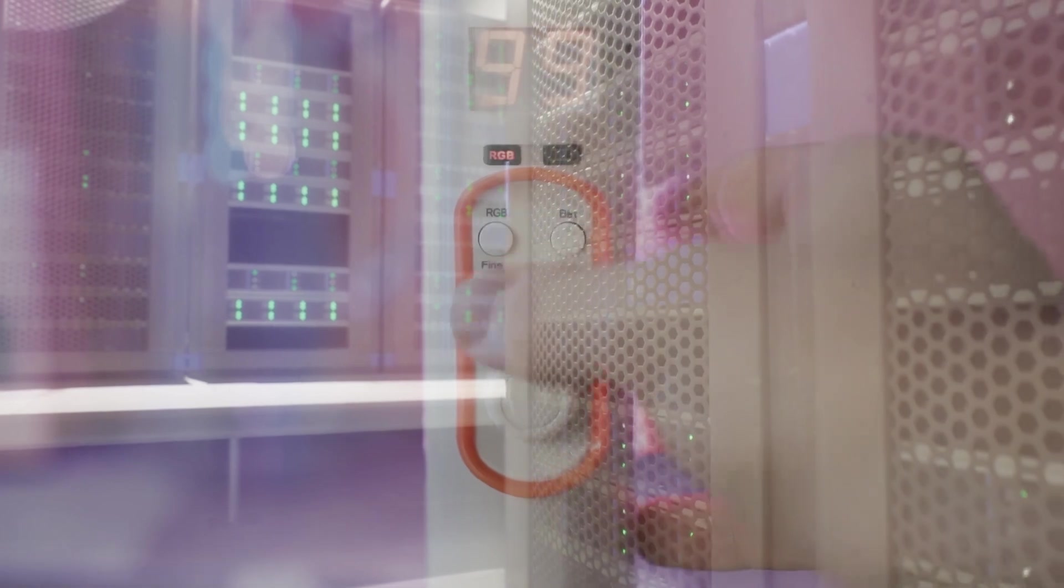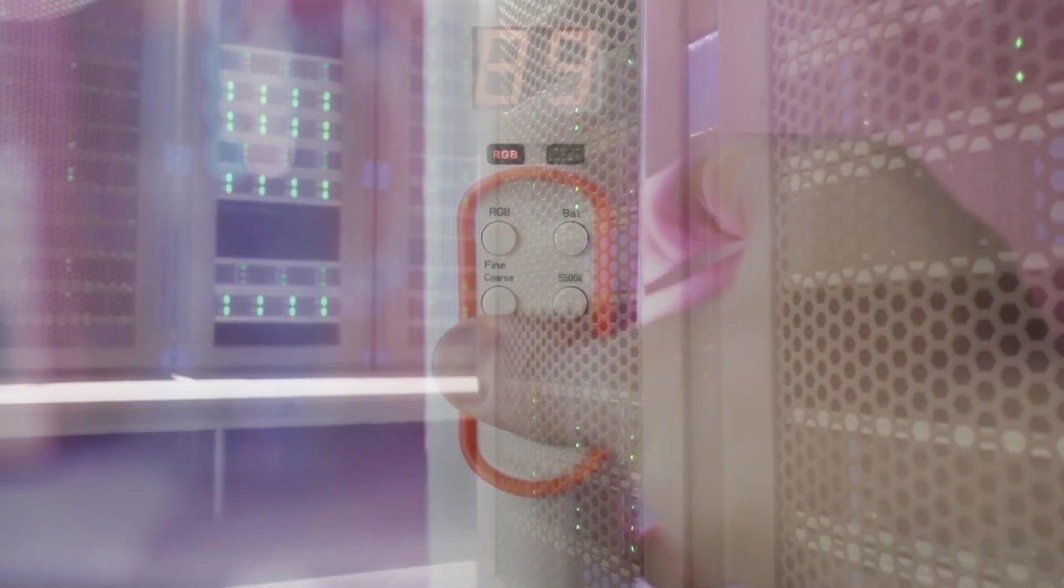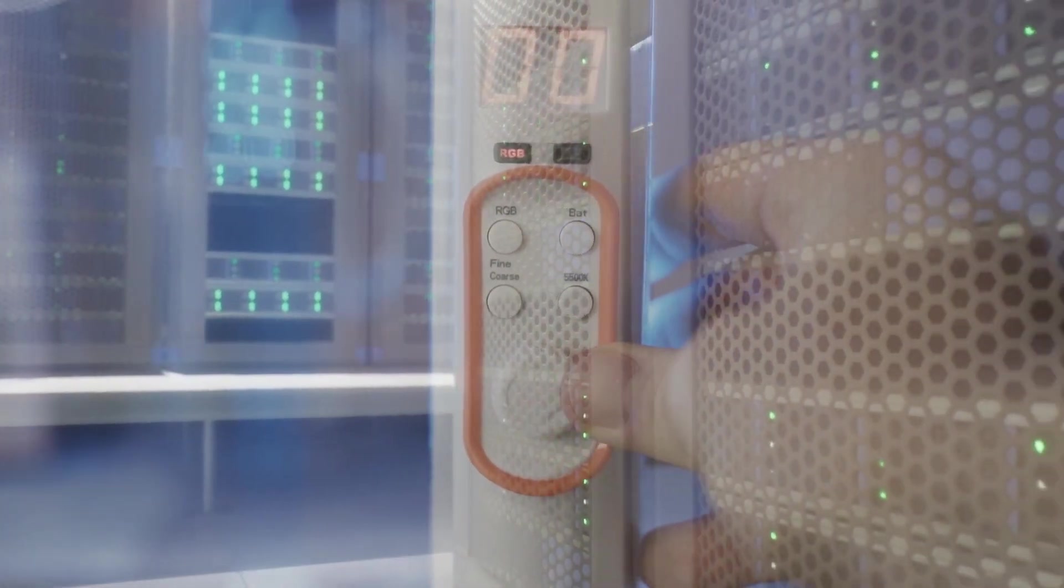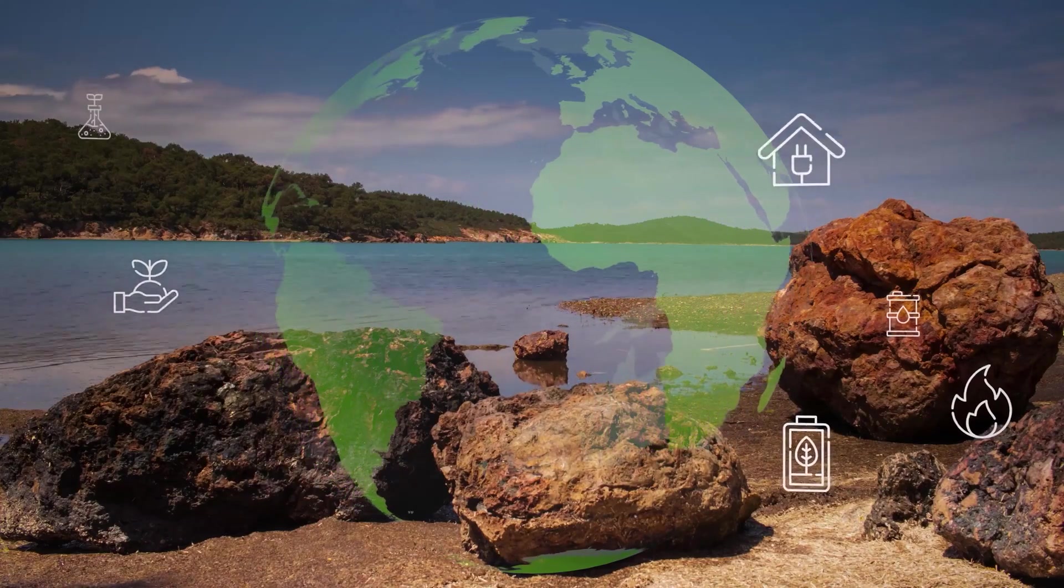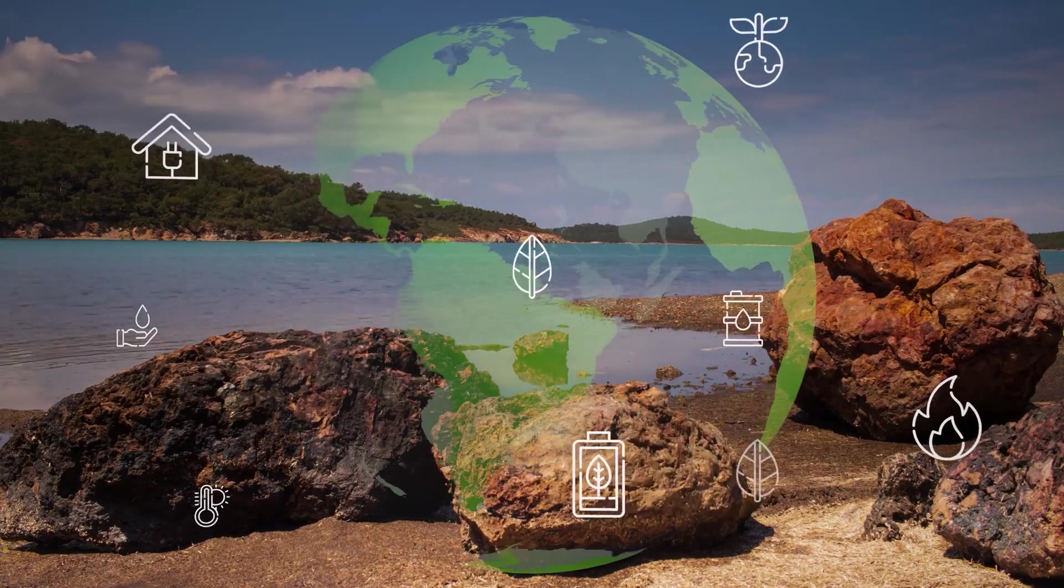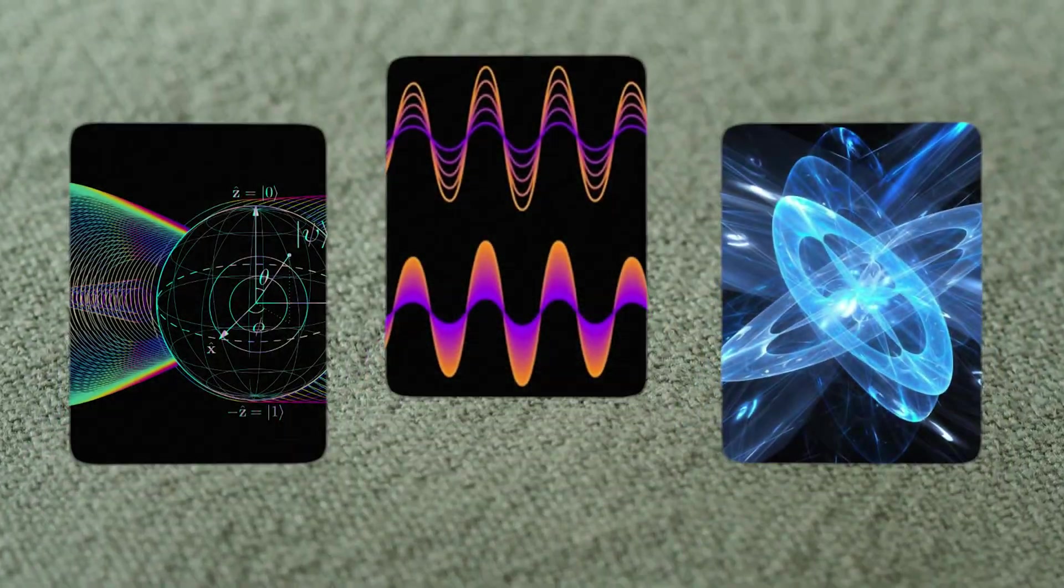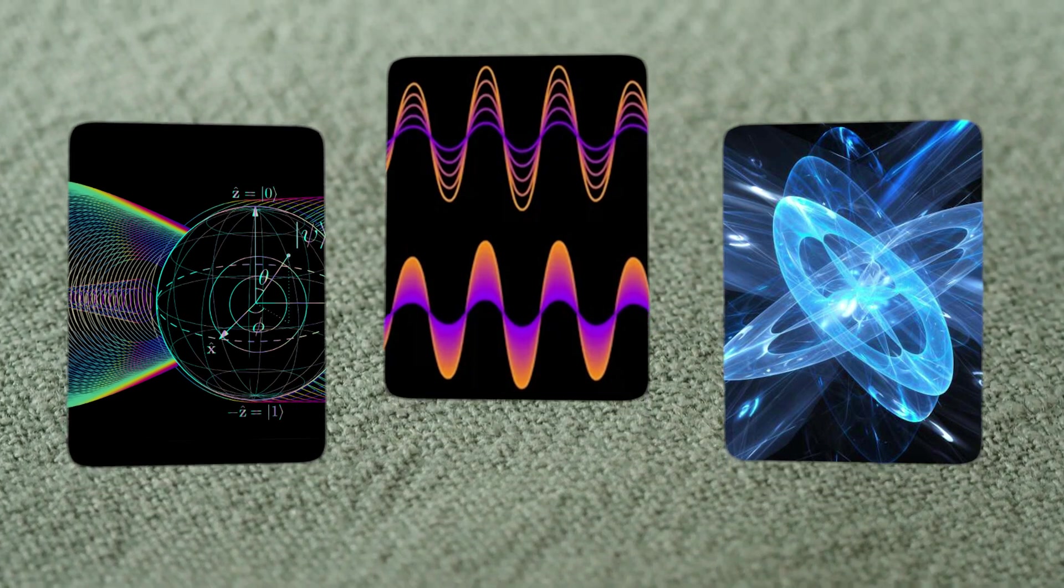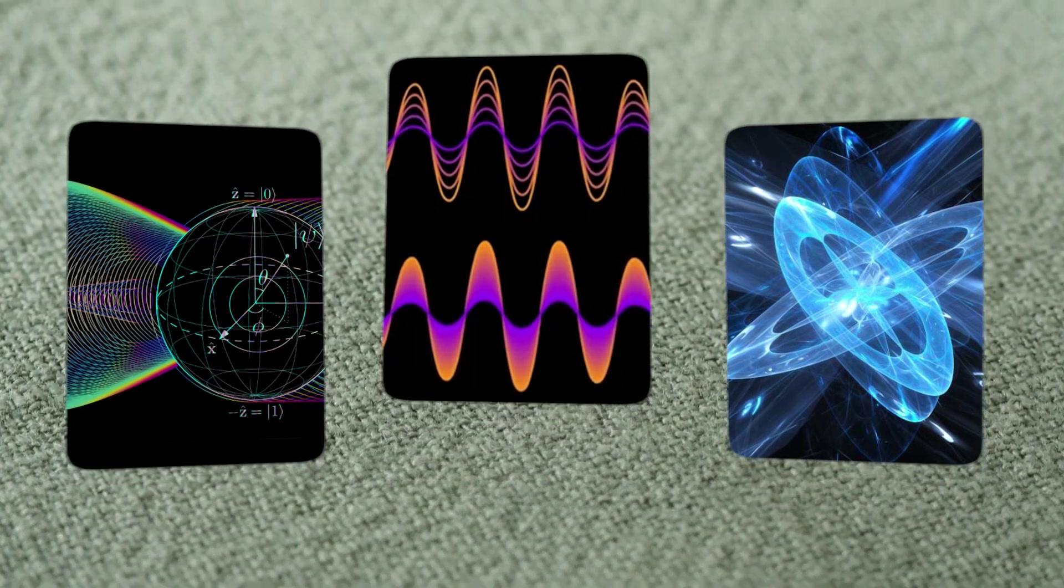To maintain order, quantum systems must operate at temperatures near absolute zero. Yet nature already solved this. Photosynthesis, a quantum process, works at room temperature. We're not there yet, but with better qubits, longer coherence, and smarter error correction, we're getting close.